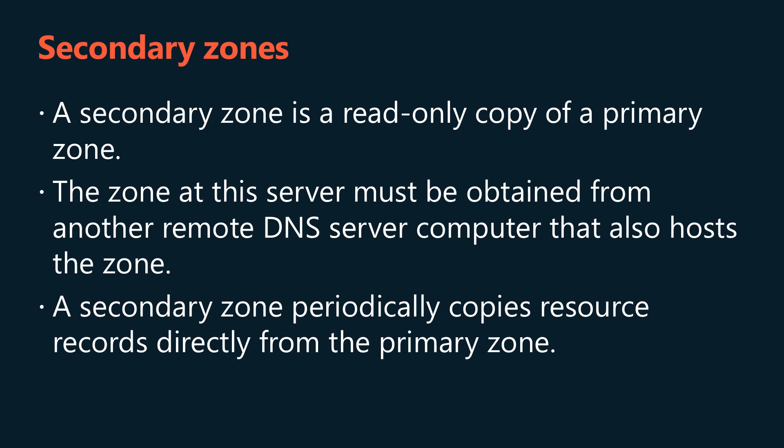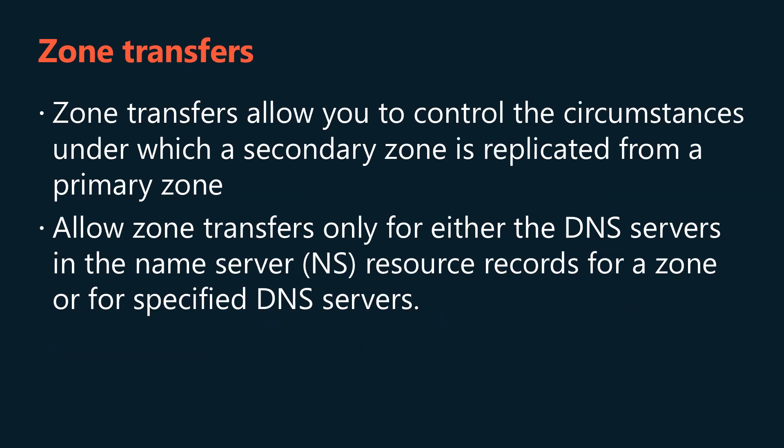A secondary zone is a read-only copy of a primary zone. When a zone that this DNS server hosts is a secondary zone, this DNS server is a secondary source for information about this zone. The zone at this server must be obtained from another remote DNS server computer that also hosts the zone. This DNS server must have network access to the remote DNS server that supplies this server with updated information about the zone. Because a secondary zone is only a copy of a primary zone hosted on another server, it can't be stored in ADDS as an Active Directory integrated zone. In most cases, a secondary zone periodically copies resource records directly from the primary zone, but in some complex configurations, a secondary zone can copy resource records from another secondary zone.